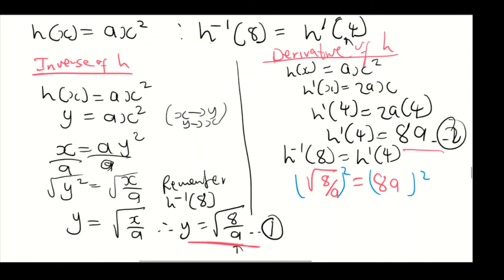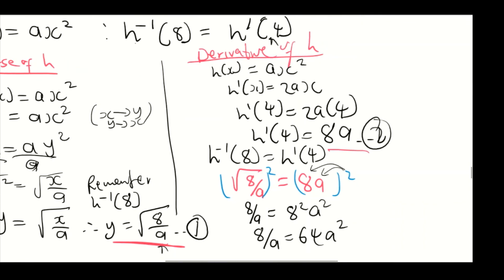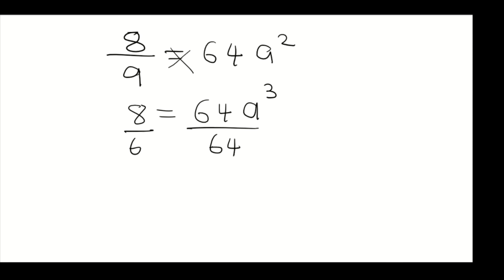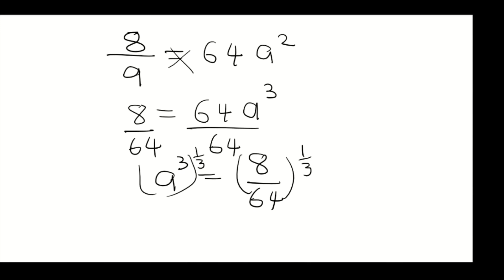From 8 over a = 64a squared, cross multiply: 8 = 64a cubed. Divide both sides by 64: a cubed equals 8 over 64. Taking the cube root of both sides — raising to the power 1 over 3 — gives a equals 1 over 2. So the value of a is 1 over 2.